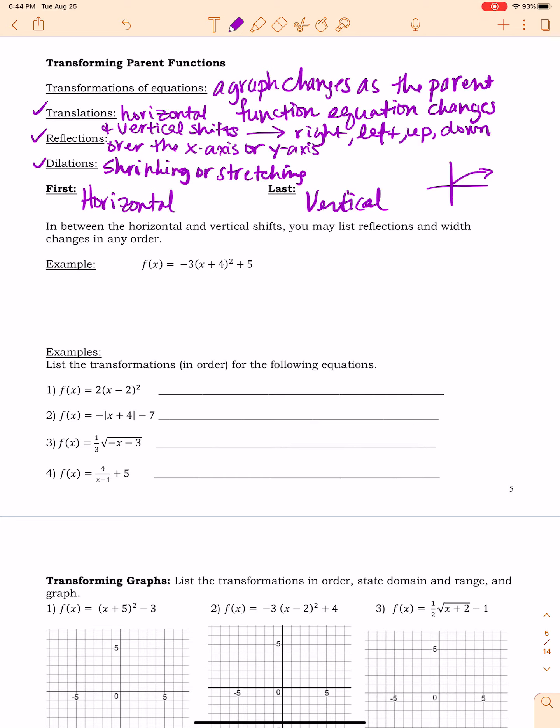All right, so what would all this stuff look like in an equation? Because all of this, this is how the graph responds to the changes in the equation. So in the equation, what do all these transformations mean? So if you'll notice in this example right here, I've got a function here, f of x equals negative 3 times x plus 4 squared plus 5.